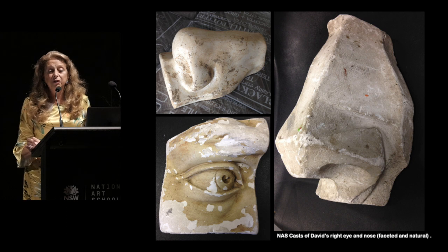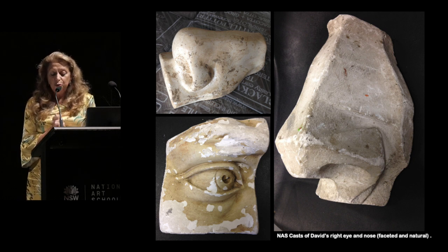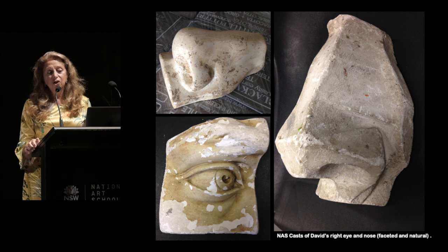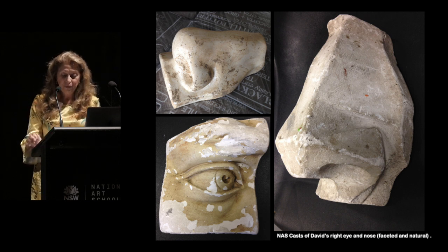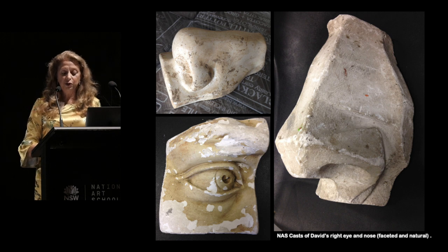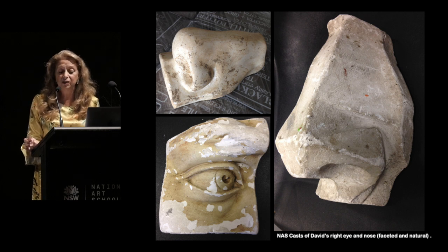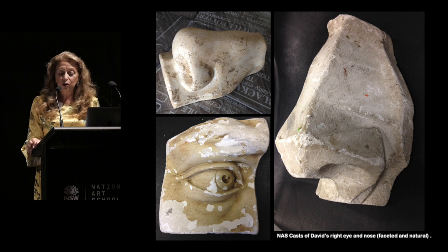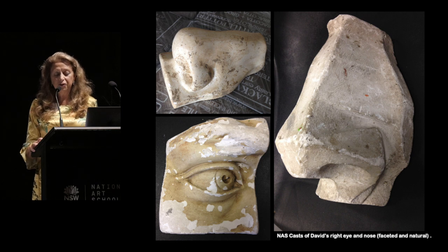The sculpture conservator at the Victoria and Albert, Joanna Puisto, writes that Bruciani's cast of David's nose always makes her think of Gogol's story 'The Nose' — the absurdist account of a nose belonging to a St Petersburg official, found inside a loaf of bread, which ends up roaming around the streets of St Petersburg. Like Gogol's nose, the fragment casts of David's face in the early 20th century here in Sydney took on a life of their own.